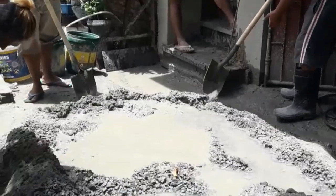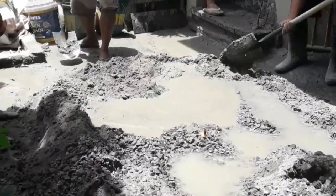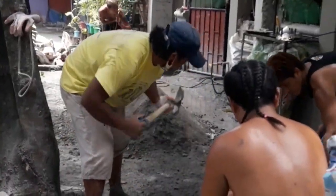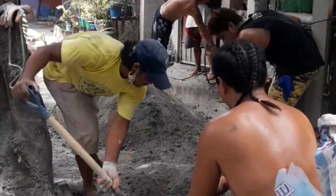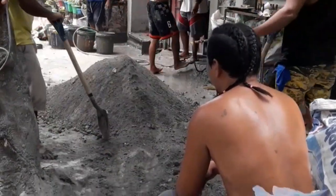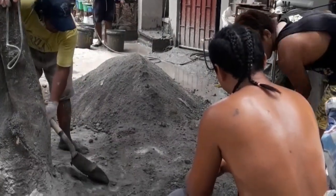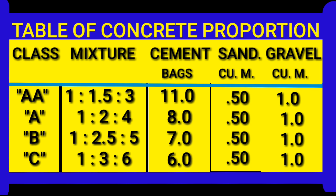This is our last mix before noon. Okay, let me start with this table of concrete proportion. We have Class Double A, which mixture is 1 is to 1.5 is to 3.